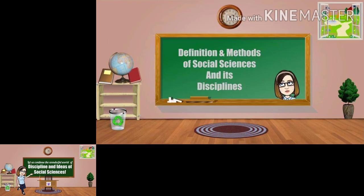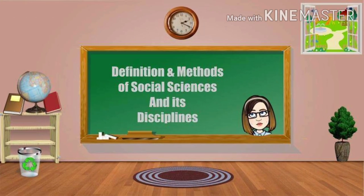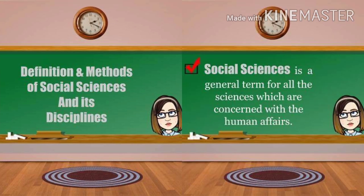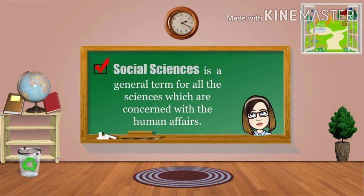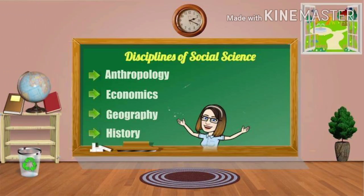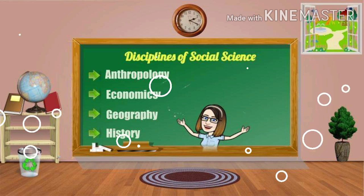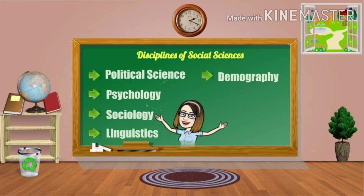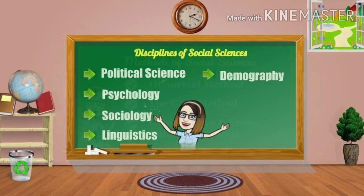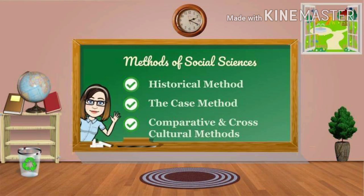Last session, we defined and identified the methods of social sciences and its disciplines. Social science is a general term for all the sciences which are concerned with human affairs. We enumerated and discussed the different disciplines: anthropology, economics, geography, history, political science, psychology, sociology, linguistics, and demography. We also explained the different methods: the historical method, the case method, and the comparative and cross-cultural methods.